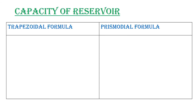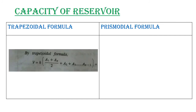The next topic is Capacity of Reservoir. A reservoir is defined by the volume of water it holds. We have two formulas: Trapezoidal formula and Prismodal formula. The Trapezoidal formula is: V = H × [(A1 + AN) / 2 + A2 + A3 + ... + AN-1], where H is the common difference and A1 through AN are the areas.